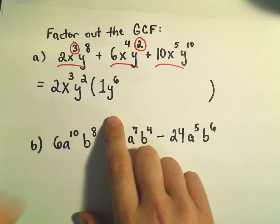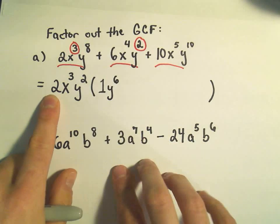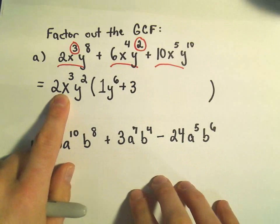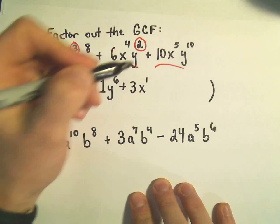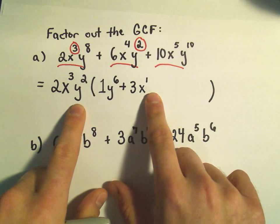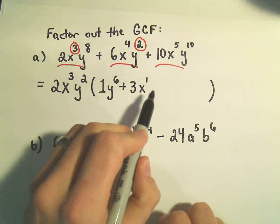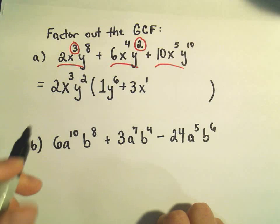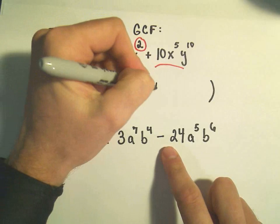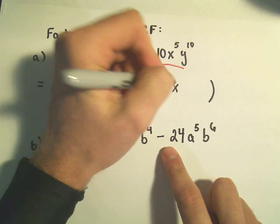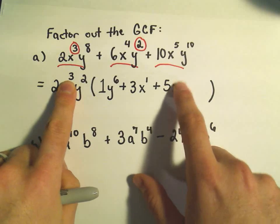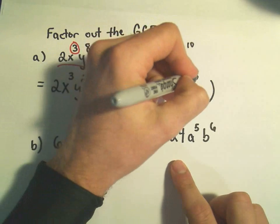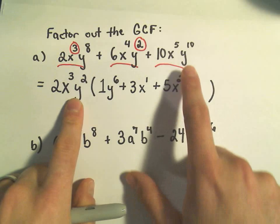Notice if I multiply 2x cubed y squared times 1·y to the sixth, I'll get my first term. Then I do the same thing: 2 times what is positive 6 — I need a positive 3. x to the third times what would be x to the fourth — since we add exponents, we need an x to the first. And y squared times 1 would be y squared, so I just write 3x to the first. Last, 2 times what is positive 10 — we need a positive 5. x to the third times x to what power is x to the fifth — we need x squared. And y squared times y to the eighth gives us y to the tenth.